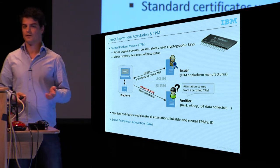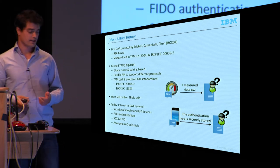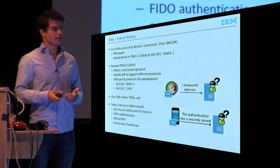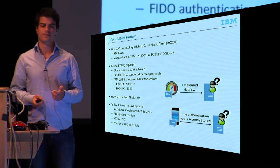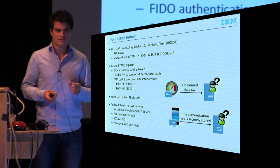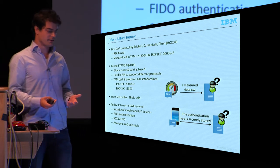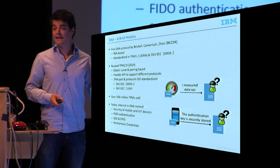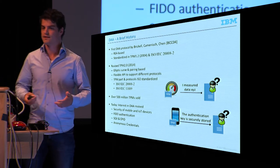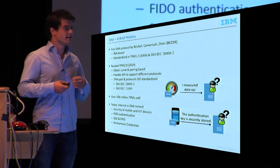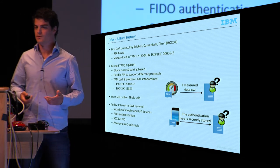Direct Anonymous Attestation was introduced in 2004 by Brickell, Camenisch, and Chen, and was made for the TPM 1.2 standard. At that time there were privacy concerns about putting a chip in your computer that can observe what you're doing, so DAA was introduced to address those concerns. Later the TPM 2.0 standard came around and included support for different anonymous attestation schemes. Since then it has been standardized by ISO, and hundreds of millions of TPMs have been sold — making this a very large deployment of a cryptographic scheme.